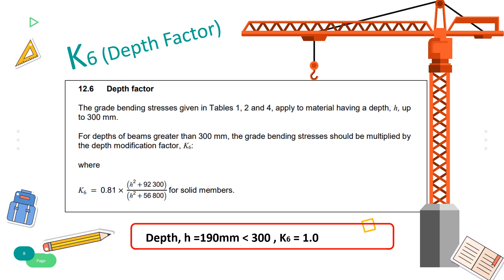Based on Clause 12.6, modification factor K6 for depth factor is 1 for this section since the depth H is 190 mm, which is less than 300.